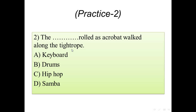Practice number two: the blank rolled at the curb, walked along the tightrope. Options: A) keyboard, B) drums, C) hip-hop, D) samba. The right vocabulary is 'drums', because as shown, ropes are used to tie the animal skin to the drum and also to hang it. Hip-hop and samba are types of dancing, and keyboard is like a cork — only drums are rolled using a rope.